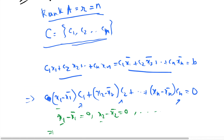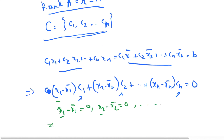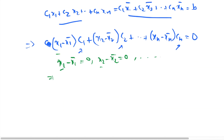Please remember and memorize this: if the rank of the coefficient matrix equals n (the number of unknowns), which also equals the rank of the augmented matrix, then the linear system will have a unique solution. That was the second claim.